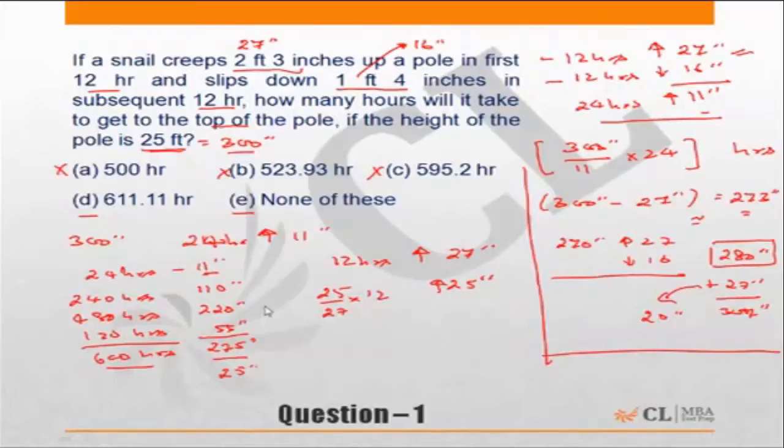So 25 by 27 into 12 will be 12 divided by 3 is 4, times 25 is 100, divided by 9, which is equal to 11.11 hours. So the snail will take 600 hours to reach the height of 275 inches, and in the next 11.11 hours it will cover another 25 inches and it will reach the top.